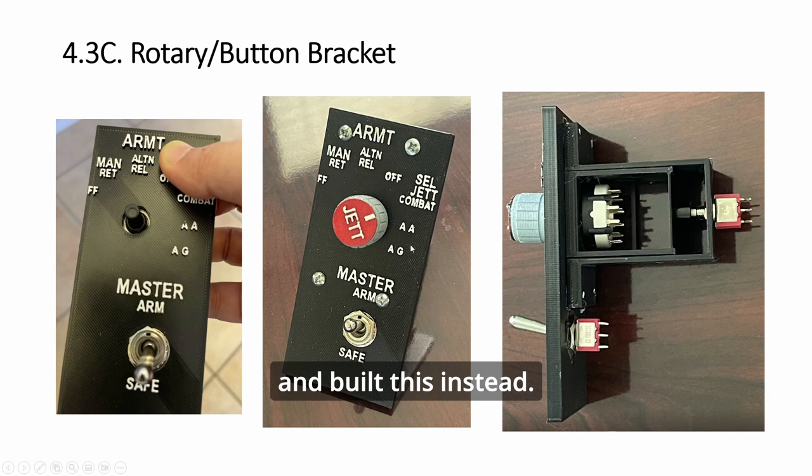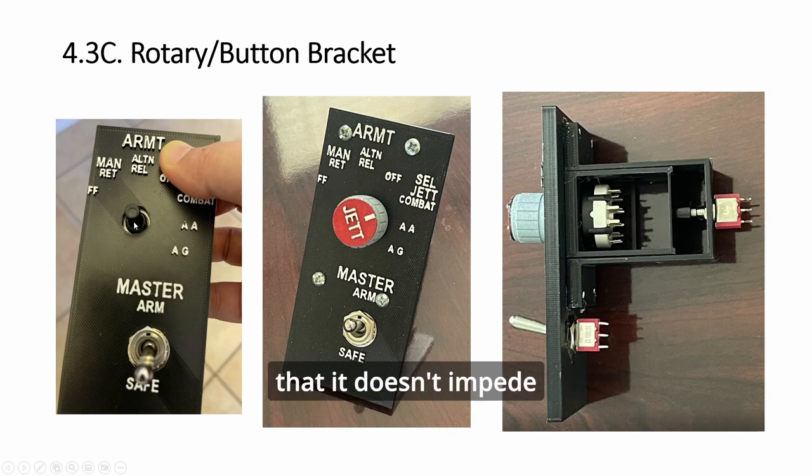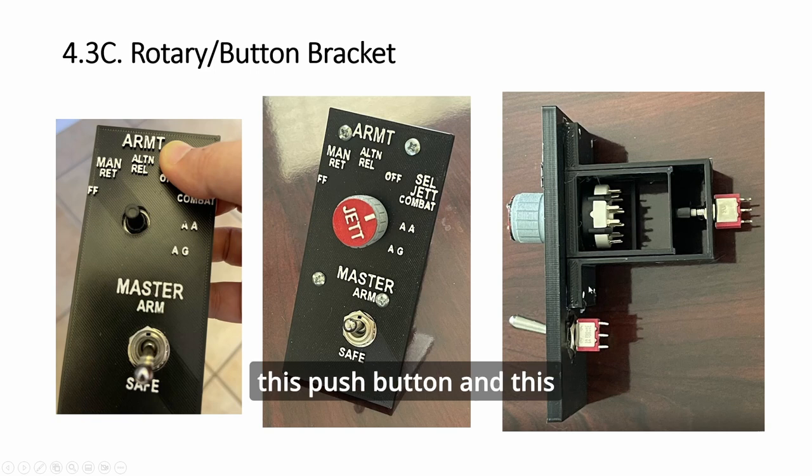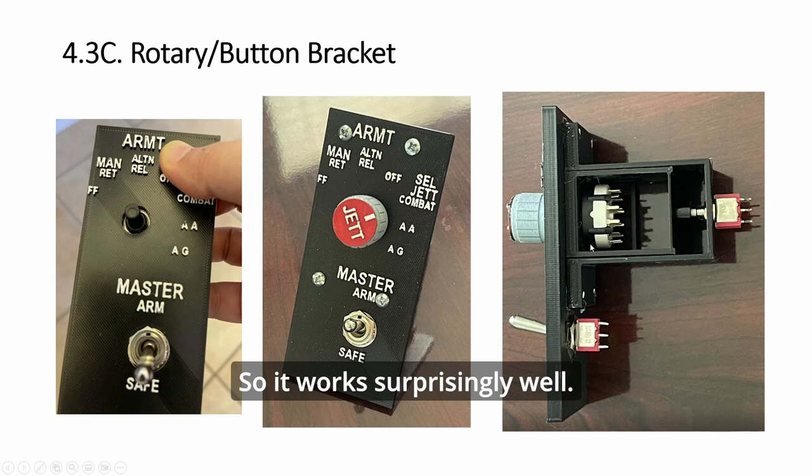I built this instead. This hole has to be big enough such that it doesn't impede the movement of the rotary shaft here. Then you put the knob over and this one will push against this push button, and this one will be the toggle. It works surprisingly well.